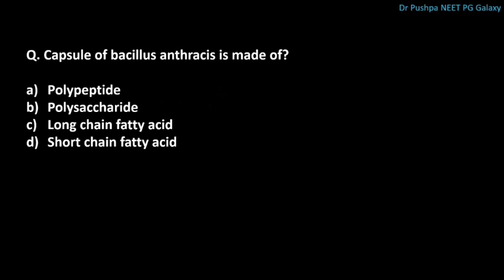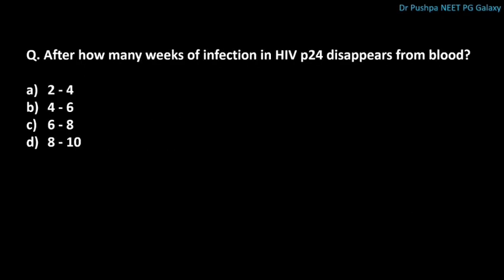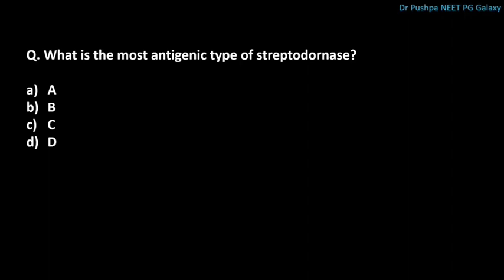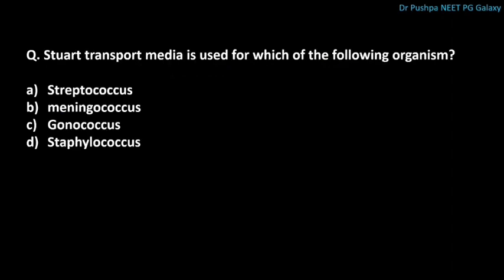The capsule of Bacillus anthracis is made of polypeptide. After how many weeks of HIV infection does P24 disappear from the blood? The correct answer is 6 to 8 weeks. What is the most antigenic type of streptodornase? The correct answer is type B. Stuart transport medium is used for Gonococcus. What is the location of the receptor for diphtheria toxin? The correct answer is the cell membrane.